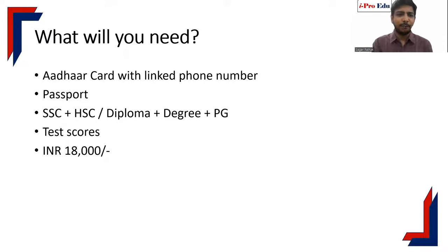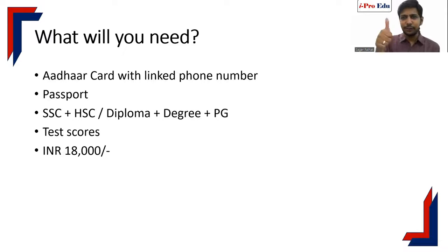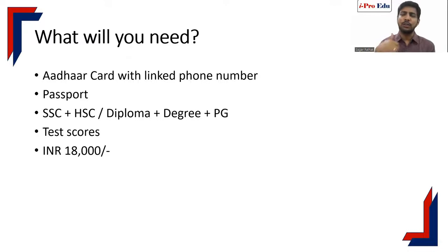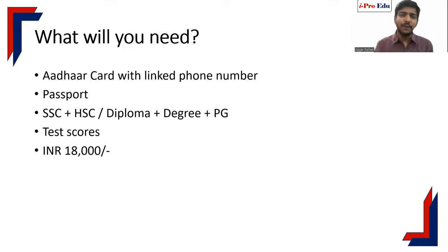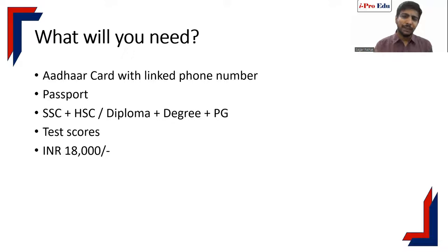The fee is 18,000 rupees as of now. There are two ways to pay. First: at the end of the form there will be a 'Pay Now' button that redirects to a payment gateway where you can pay by debit card, credit card, or UPI. However, many students have faced problems with payment rejections or failures. There are threads on the website about what to do when payment fails.